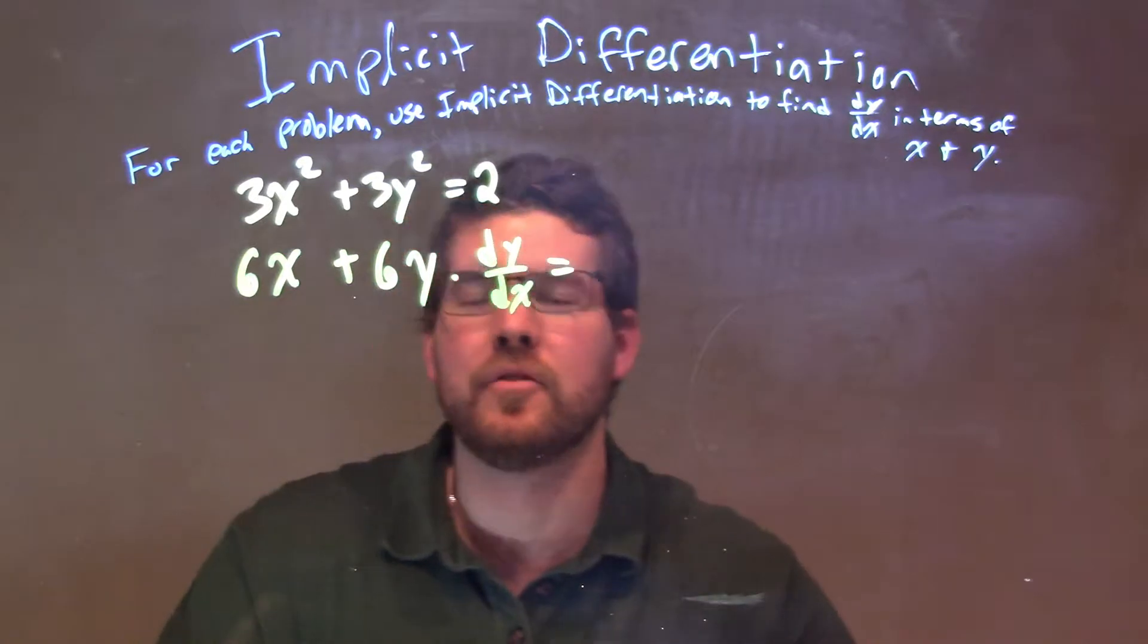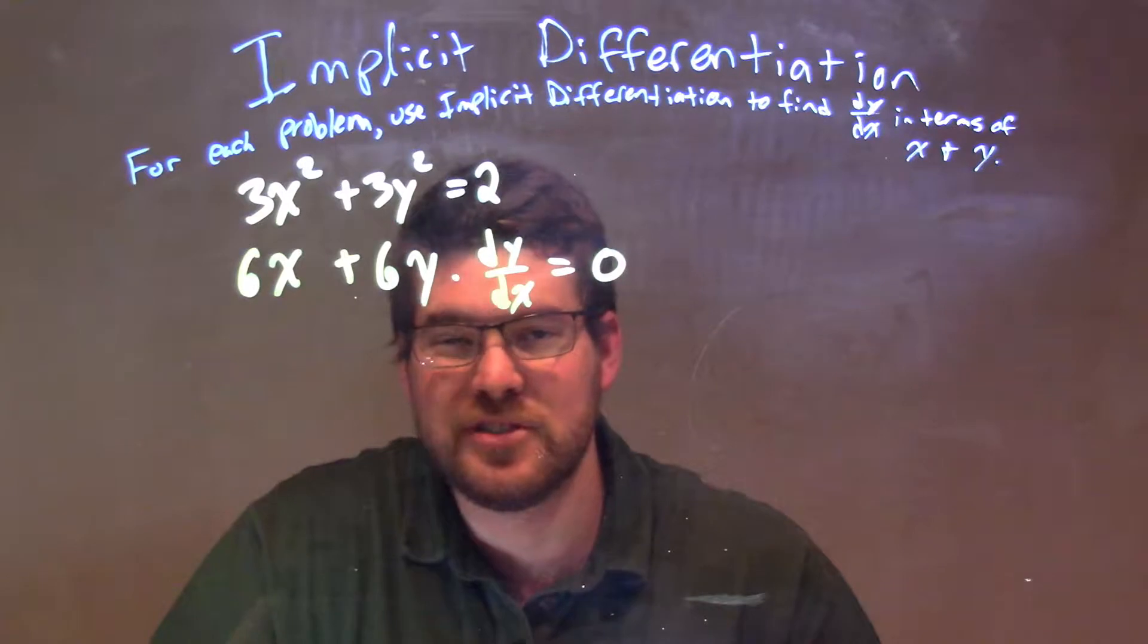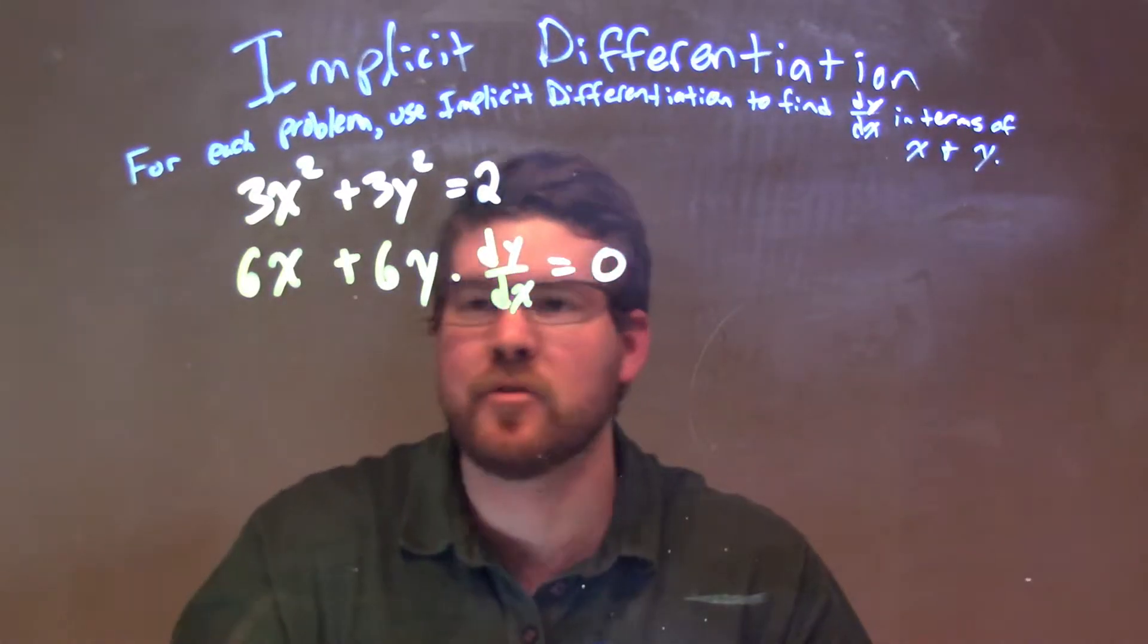And that's equal to, well, 2, where the 2 is just 0. So now my goal is using some algebra to get dy/dx by itself.